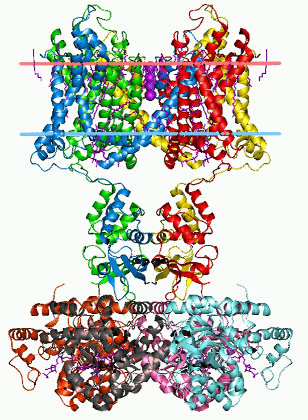Ionotropic receptors, otherwise known as ligand-gated ion channels, are fast-acting receptors that mediate neural and physiological function by ion-channel flow with ligand binding. Nicotinic, GABA, and glutamate receptors are among some of the cell surface receptors regulated by ligand-gated ion channel flow. GABA is the brain's main inhibitory neurotransmitter and glutamate is the brain's main excitatory neurotransmitter.